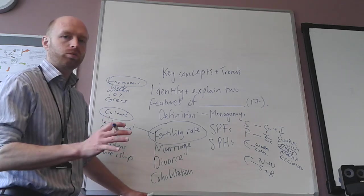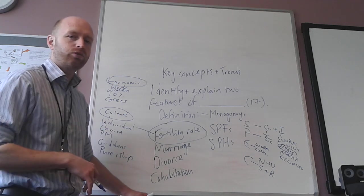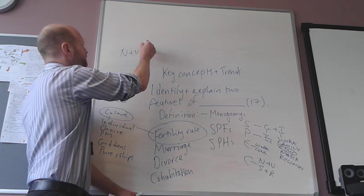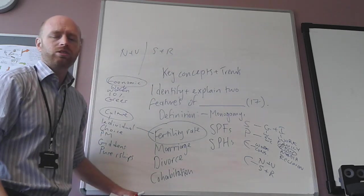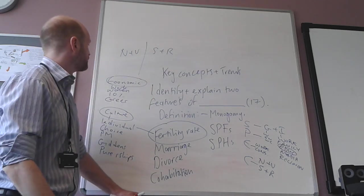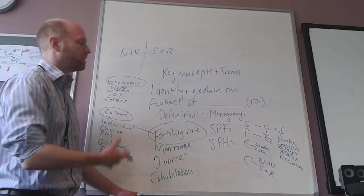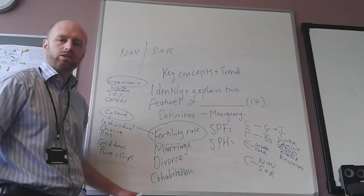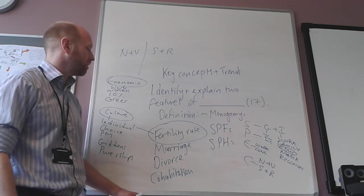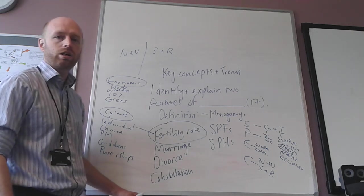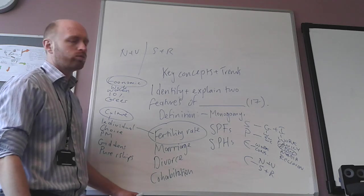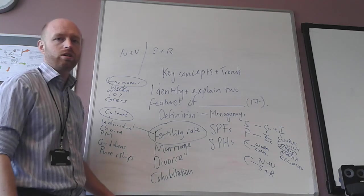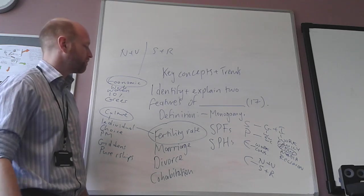You can also split it up in a slightly different way. So you could look at it in terms of norms and values and status and roles. And then you could do that with fertility rate. You could have said norms and values in relation to motherhood have changed. Status and roles, women's status has changed and so on. The role of motherhood has changed. So that's a slightly different way of looking at it. But there we are, those are my ideas there.